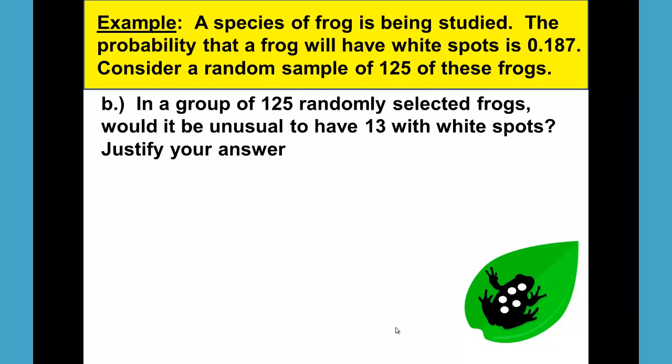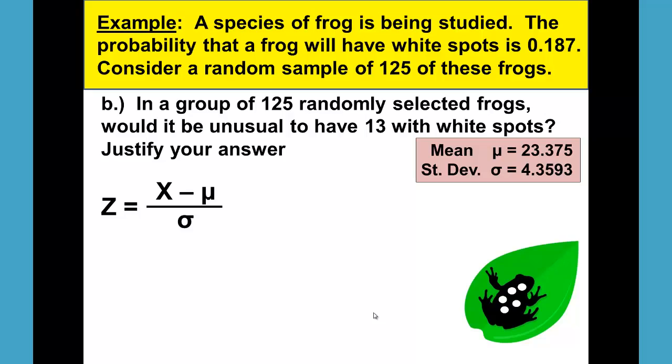In a group of 125 randomly selected frogs, would it be unusual to have 13 with white spots? Here are our mean and standard deviation from part A and our z-score formula.